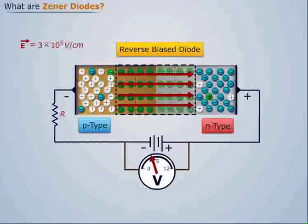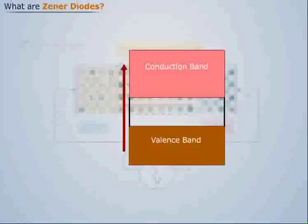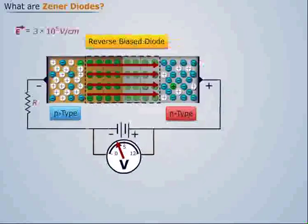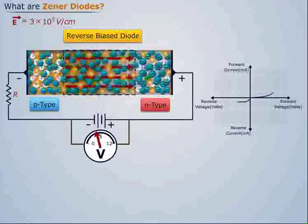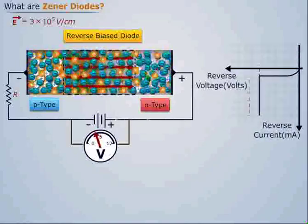This intense electric field then pulls some of the valence electrons into the conduction band by breaking their covalent bonds. Due to this, the electrons are available freely for conduction resulting in an increase in the number of electrons. As a result, there is a rapid increase in the value of reverse current and a Zener breakdown is said to occur.